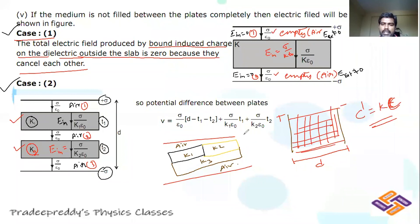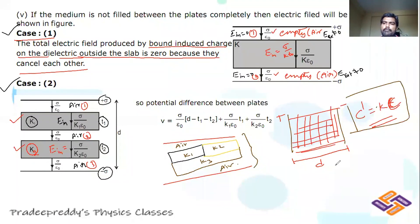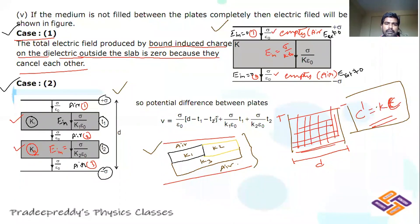Effective capacitance varies depending upon the dielectric constant. If completely filled with one medium, effective capacitance is k×C. For partial or multiple dielectric slabs, finding effective capacitance will be discussed in the next video session.